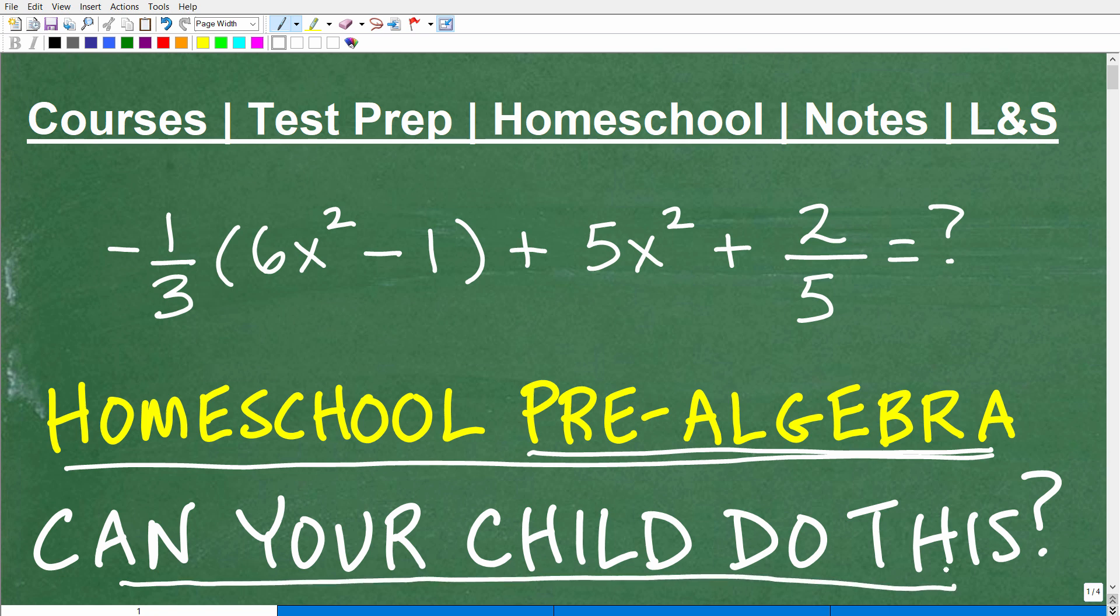Well, let me go ahead and explain the problem here. We have negative one-third times six x squared minus one plus five x squared plus two-fifths. What we want to do is simplify this. We want to simplify this variable expression and clean it up.